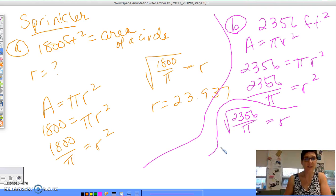2356 divided by π, and that's 27.384. So r = 27.385, excuse me.